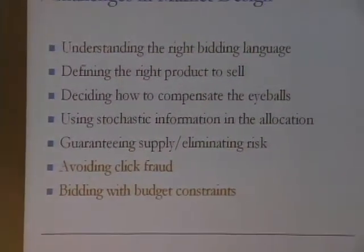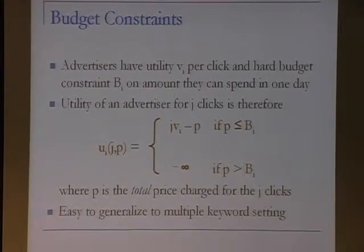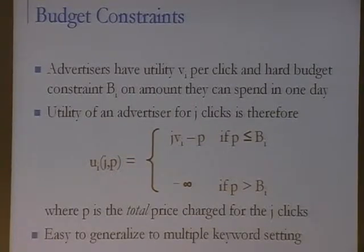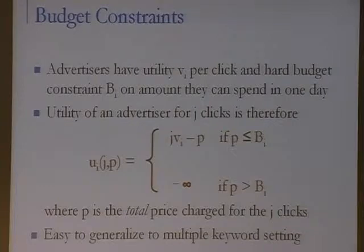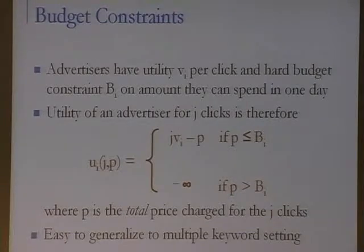Let me move on to the budget constraints work. Advertisers have a utility v_i per click per keyword, and a hard budget constraint B_i on the amount they can spend in one day. If an advertiser receives j clicks at price P, their utility is j × v_i − P, so long as P is less than their budget constraint. But if P exceeds their budget constraint, their utility is minus infinity. This can be generalized to multiple keyword settings.